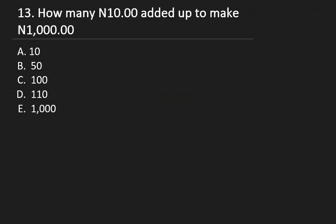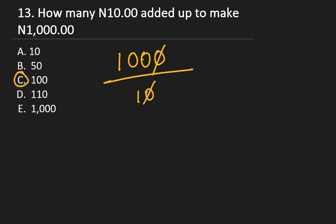Question 13: How many 10 Naira notes add up to make 1,000? Simply divide 1,000 by 10: the zeros cancel to give 100. The right answer is C: 100.